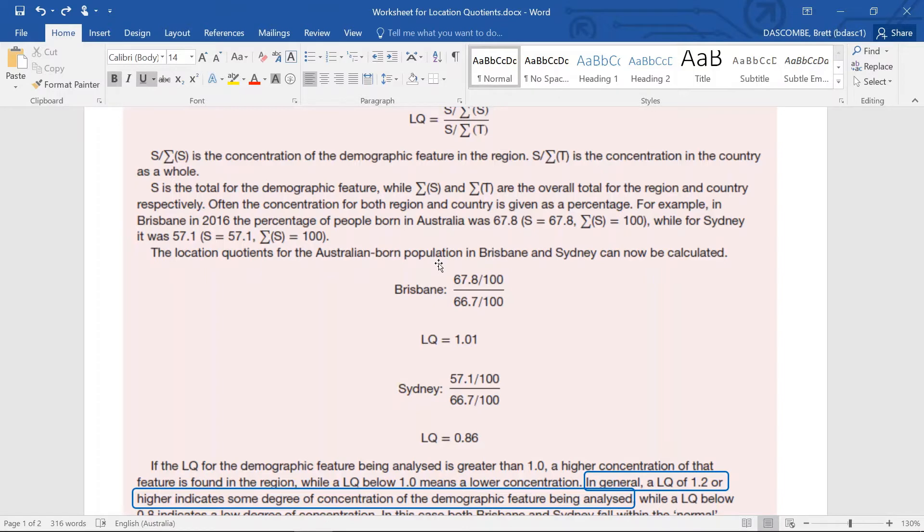And the location quotient is just 67.8 divided by 100, 66.7 divided by 100, and then those two figures are divided by each other. You get 1.10, and that's just the location quotient number.